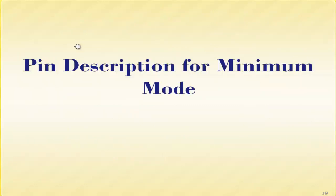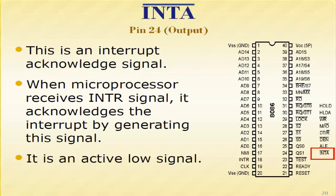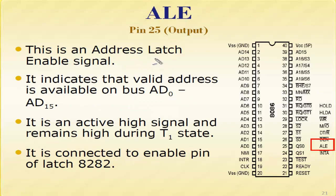Now let's discuss the pin description for minimum mode. First is interrupt acknowledgement, pin number 24. When the microprocessor receives an interrupt signal, it acknowledges the interrupt by generating this signal. It is an active low signal — it has a bar on top — meaning when it goes low the device is acknowledged and can go forward and do the job.